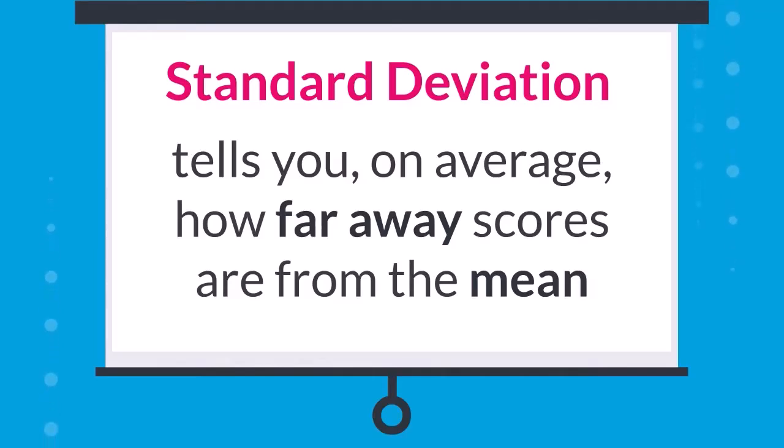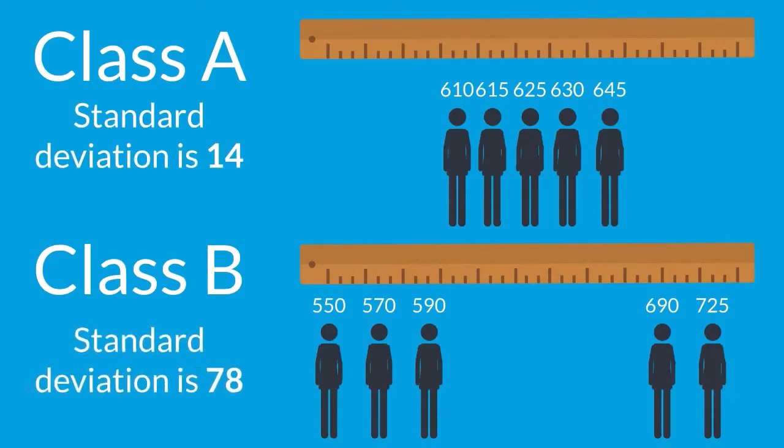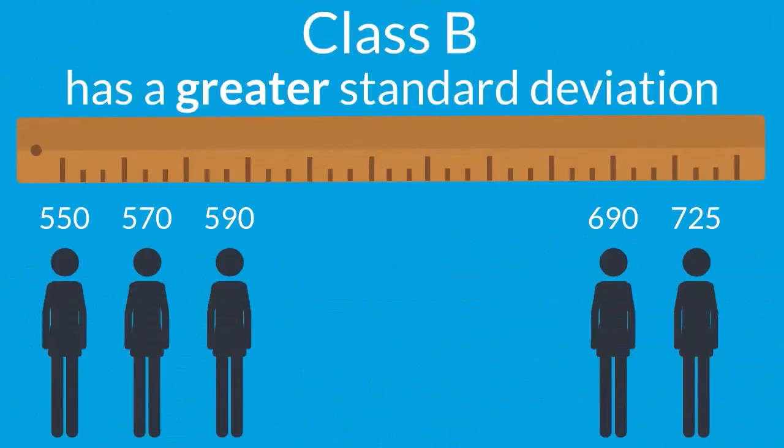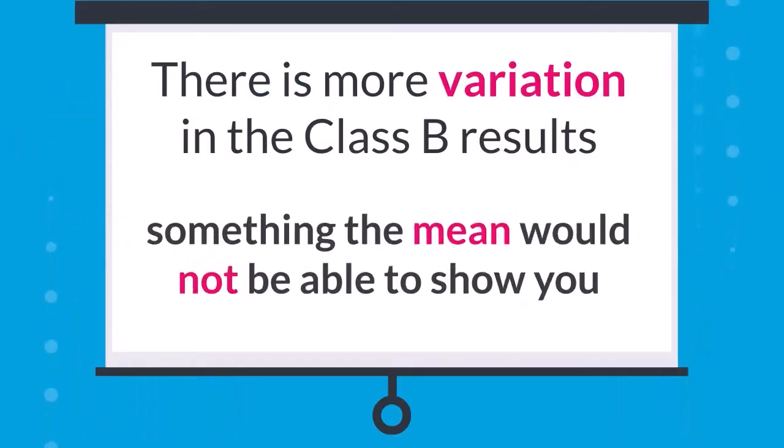We'll spare you the calculation, but the standard deviation of Class A is about 14, and the standard deviation of Class B is about 78. Since Class B's scores are more spread out, Class B has a greater standard deviation. This means there is more variation in the Class B results, something the mean would not be able to show you.